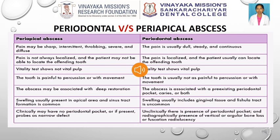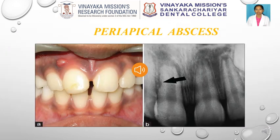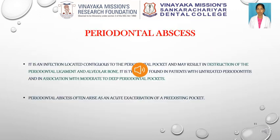In periapical abscess, the swelling is associated mostly with sinus tract formation. In periodontal abscess, the swelling involves the gingival tissue and hence sinus and fistula are uncommon. In this picture, we can clearly appreciate the periapical abscess and sinus tract formation in tooth 1-1.